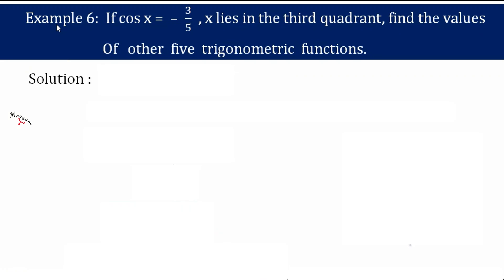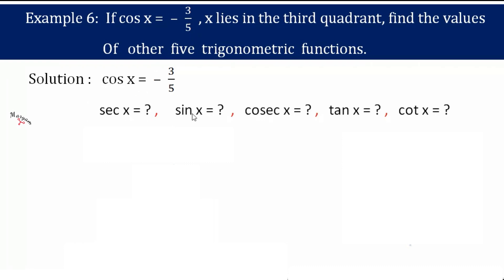Hello students, in this video we are going to discuss example 6 of the trigonometry chapter. If cos x equals minus 3 by 5 and x lies in the third quadrant, find the values of the other five trigonometric functions. We need to find sin x, cosec x, sec x, tan x, and cot x.